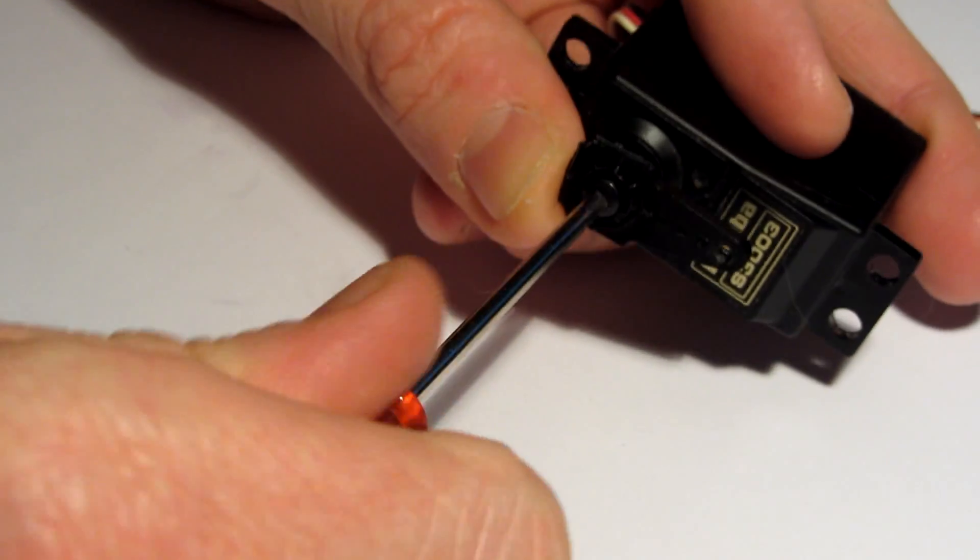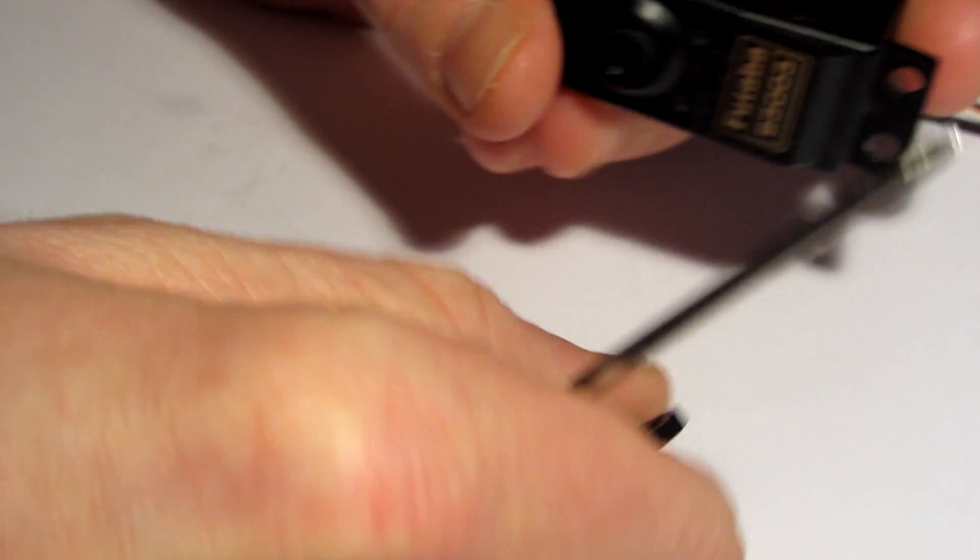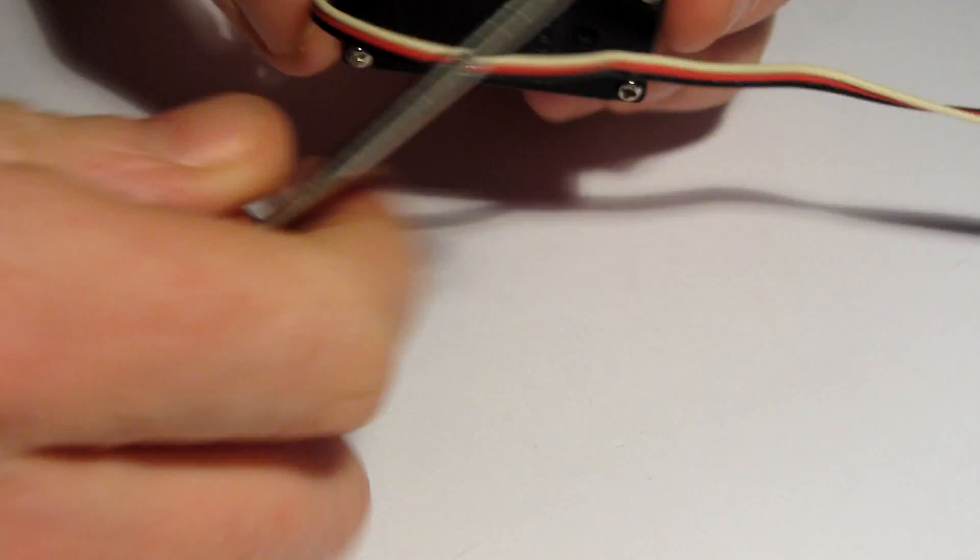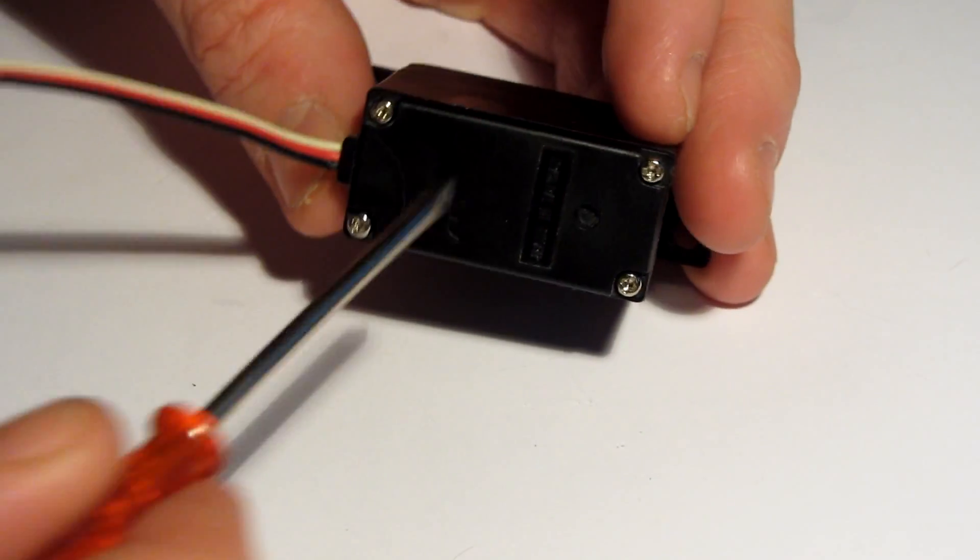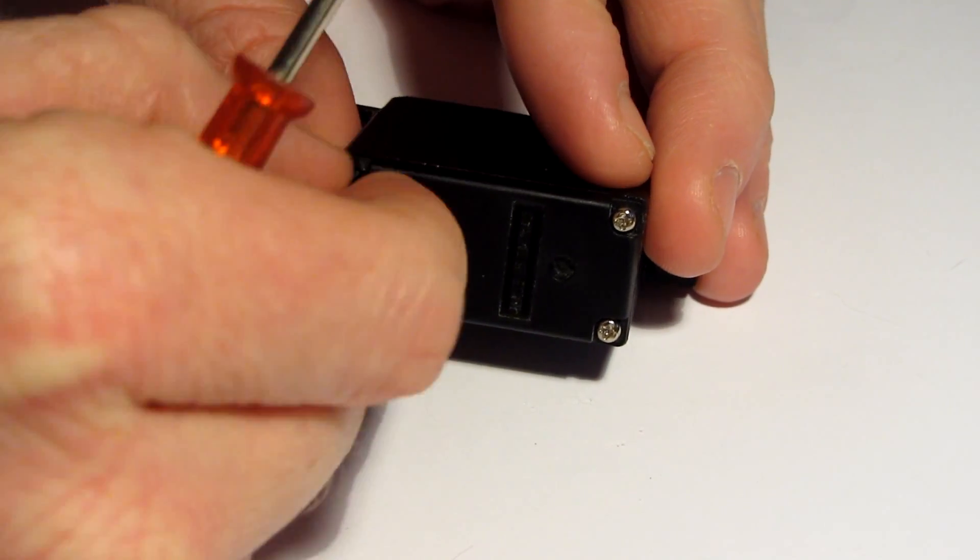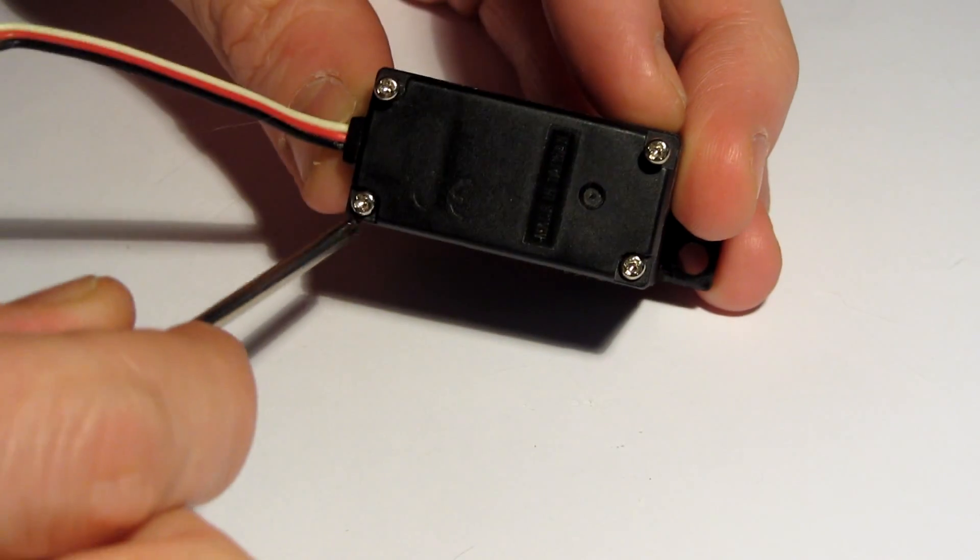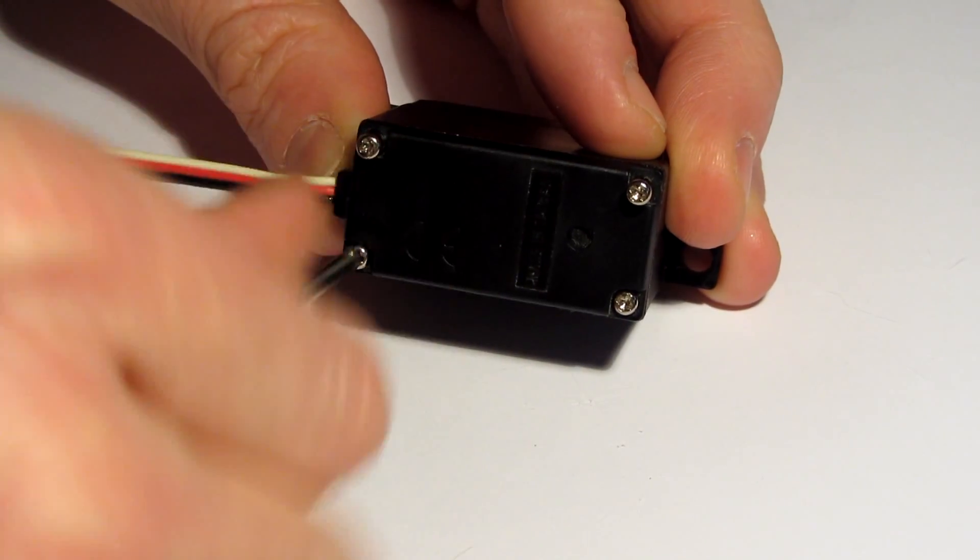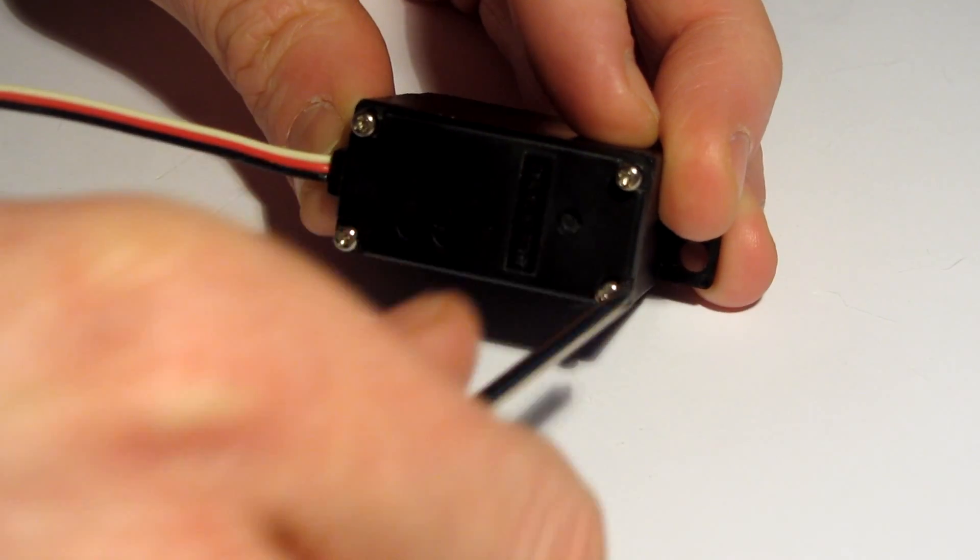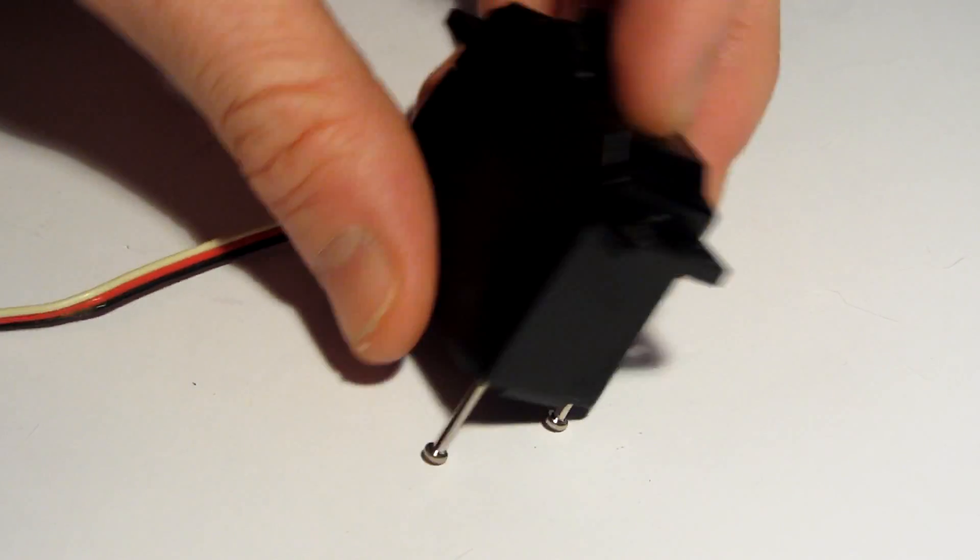The first thing you want to do is take off the servo control arm and put that to one side. We're going to remove the four screws underneath. You don't need to take these out completely because you don't need to remove the bottom part of the servo. We're just going to loosen each of these to free up the top.